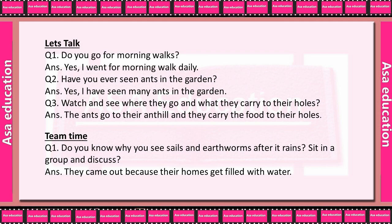Team time. Do you know why you see snails and earthworms after it rains? Sit in a group and discuss. Kabhi apne socha hai jo snail aur earthworm hote hain, wo barish hone ke baad bahar kyun nikaal aati hain? Group mein socho aur discuss karo. Ansar kya hoga iska? They come out because their homes get filled with water. Unka jo ghar hota hai usmein paani bhar jaata hai, iski wajah se woh bahar nikalti hain.